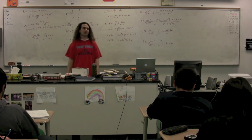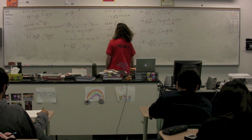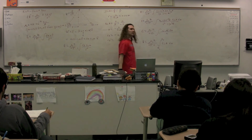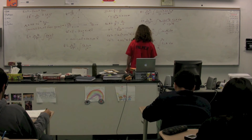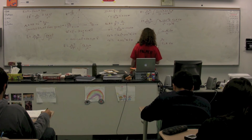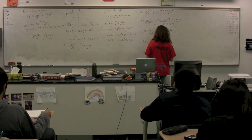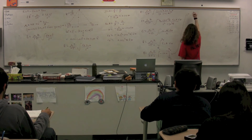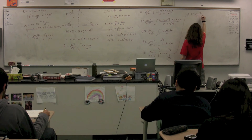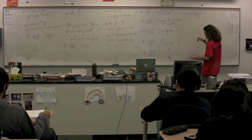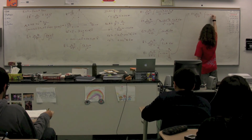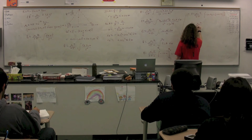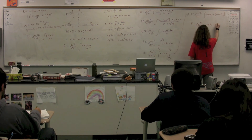That's actually something we can integrate. Our initial and final conditions go from theta initial to theta final. The integral of sine theta is negative cosine theta. So we have mu-naught over 4 pi A times negative cosine theta evaluated from theta initial to theta final, giving B equals mu-naught I over 4 pi A times cosine theta initial minus cosine theta final.